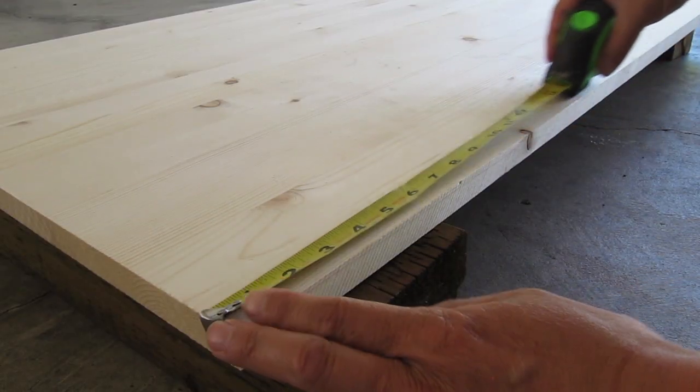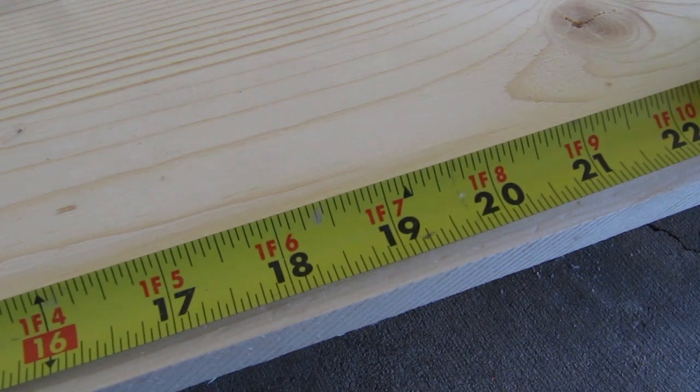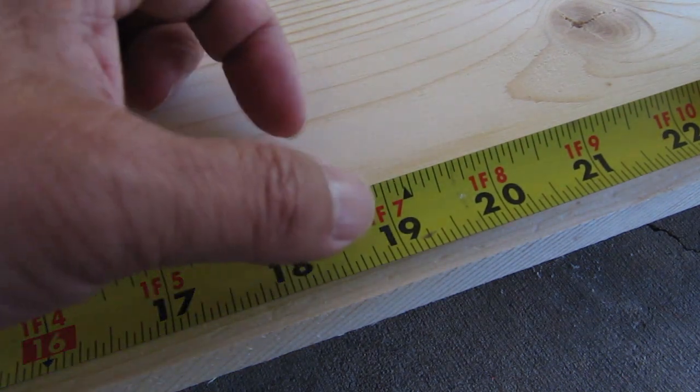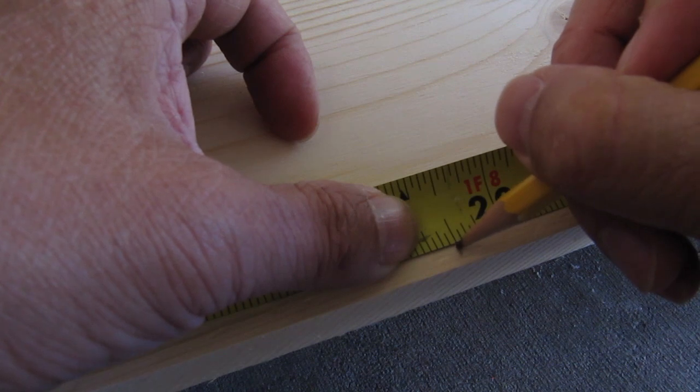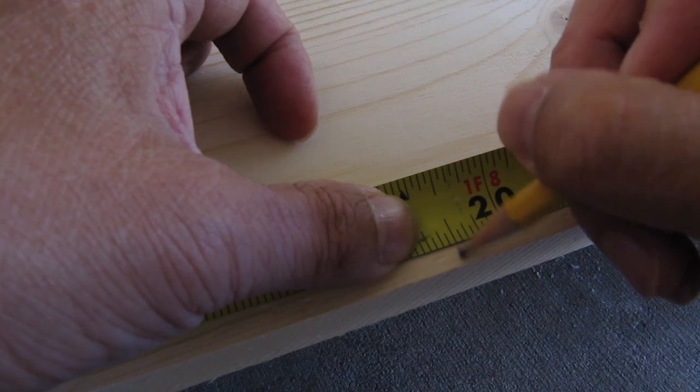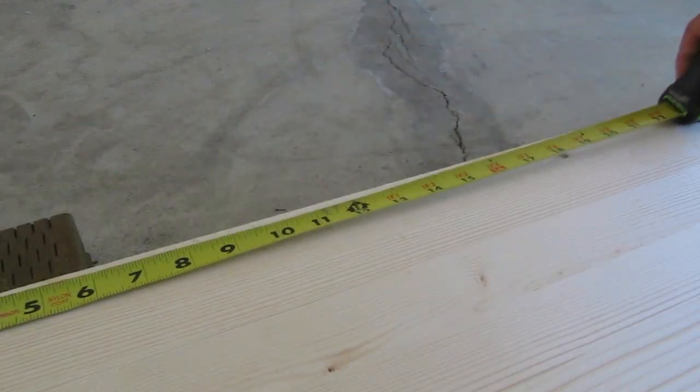This shelf is going to be 19.5 inches wide so I'll mark that with a tape measure on my board. And I'll do the same on the top of the board as well.